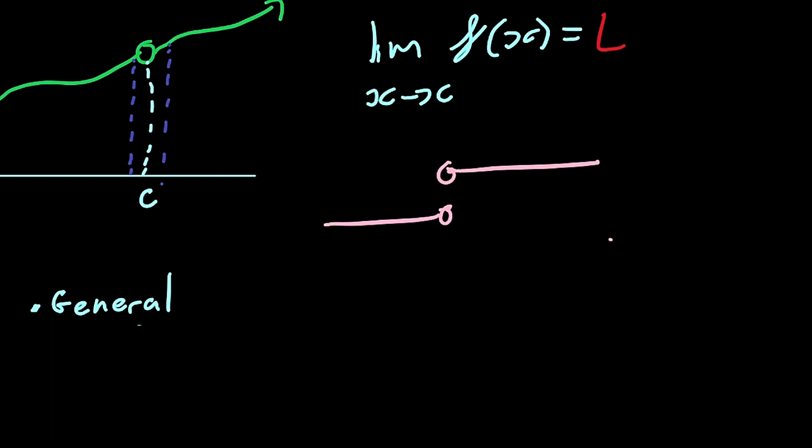The next thing it needed to be was rigorous. What that means is it needed to be such that everybody agreed on it — so everyone would say 'yes, we'll use the epsilon-delta definition,' and no one would say the limit's this while someone else says it's that. Everyone would get the same answer.